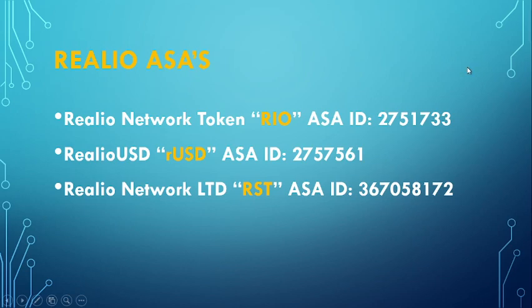Now here is the point of this video — there are three different flavors of Realio that you can get. Realio is primarily on Algorand, however it is on other blockchains as well, and you can also find it on Uniswap. When you're looking through the platform, you'll see the RIO token as an ASA, you'll see the RUSD token, and the Realio Network Token which is RST.